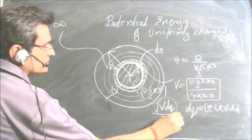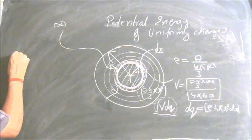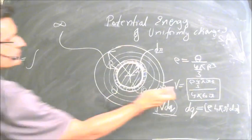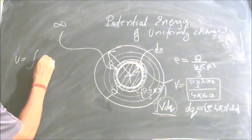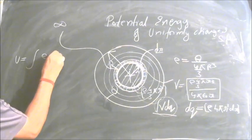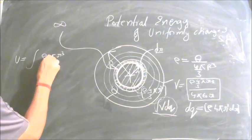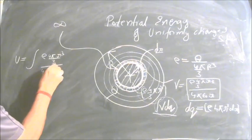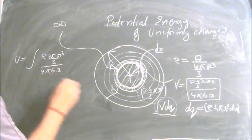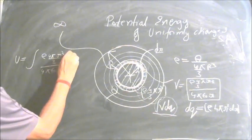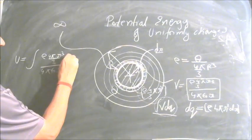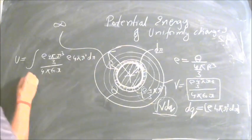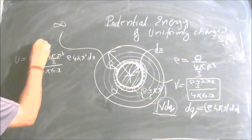Now we can use this equation. The potential energy is the integral: V is rho · (4/3)πr³ / (4πε₀r), multiplied by dQ = rho · 4πr²dr, with r varying from 0 to capital R.